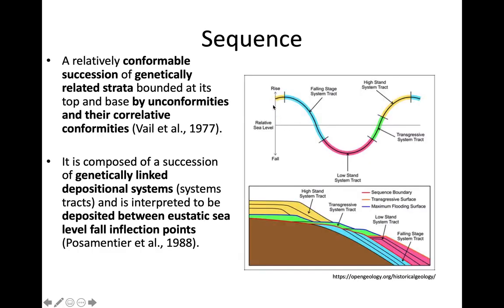Our sequence is bound by unconformities on either side. The sequence is composed of a number of linked depositional systems called systems tracks. Within one sequence we have systems tracks showing regression and transgression, deposited between eustatic sea level fall and flexion points. We'll see multiple systems tracks within one sequence.